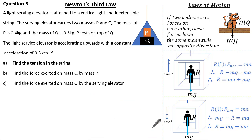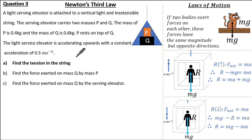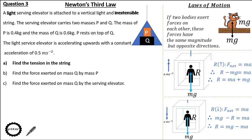Now the last question. A light serving elevator is attached to a vertical light inextensible string and carries two masses p and q. The mass of p is 0.4 kg and the mass of q is 0.6 kg, with p resting on top of q. The serving elevator accelerates upwards with a constant acceleration of 0.5 m/s². Find the tension in the string. Remember: 'light' means no mass, 'inextensible' means it cannot stretch, and use g = 9.8 m/s².